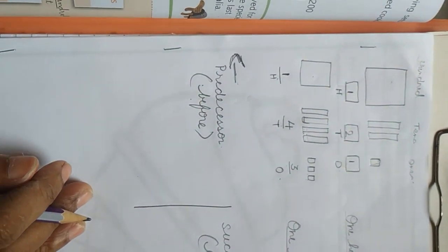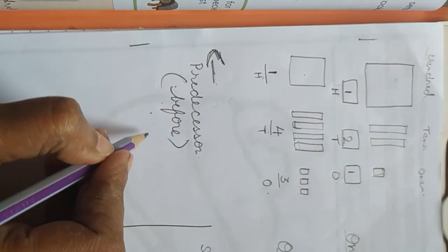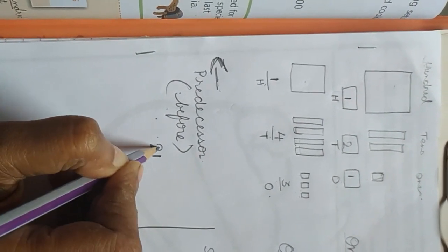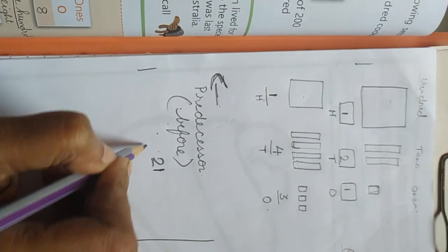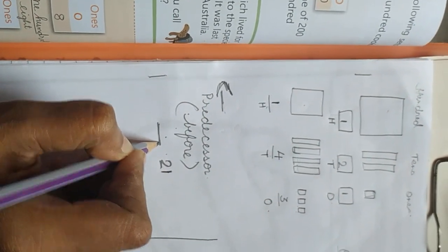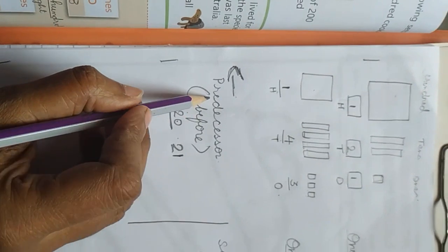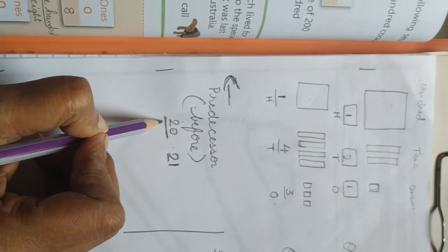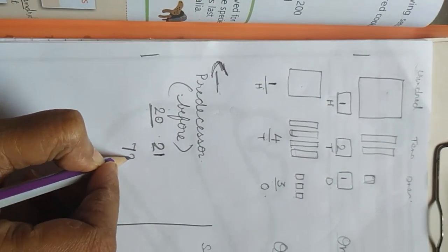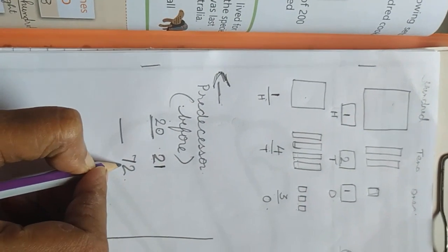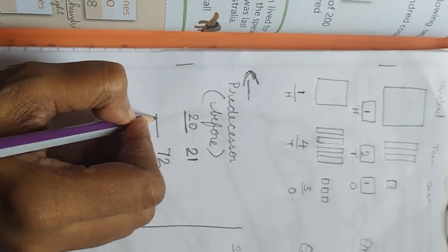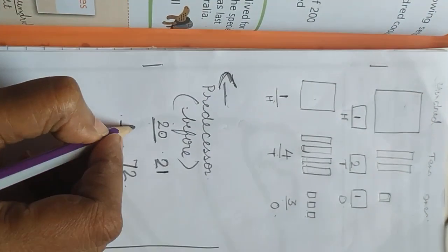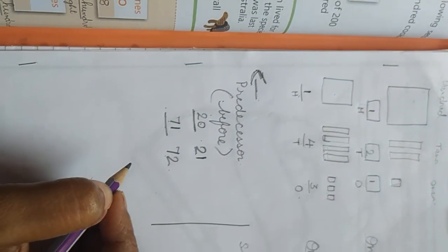Okay children. So now I am going to tell you number 21 — a two-digit number. Which number is before 21 children? 20. So predecessor numbers — 20 is before 21. Now 72 — which number will be before 72? That is 71.